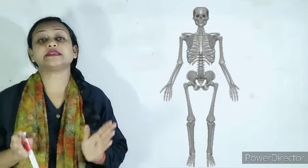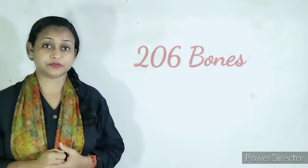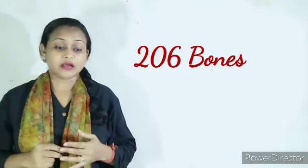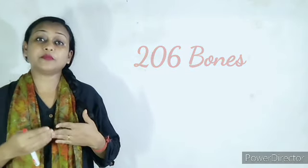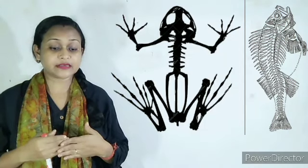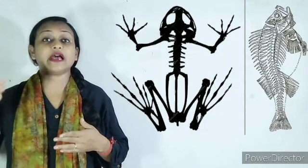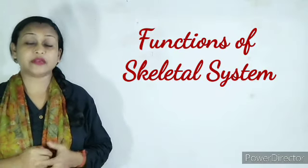The human skeleton consists of 206 bones. The size of the bones differs from person to person — a taller person will have longer bones, whereas a shorter person will have smaller bones. But as a whole, in an adult human being there will be 206 bones.